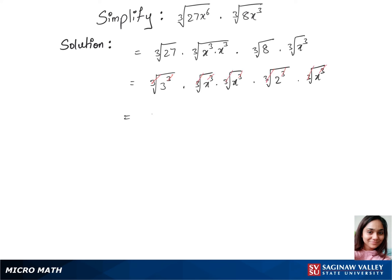We'll cancel out the cubic root and cube. So that's 3 times x times x times 2 times x. Multiplying these, 3 times 2 is 6, and we have three x's, so that's x cubed. That's our final answer.